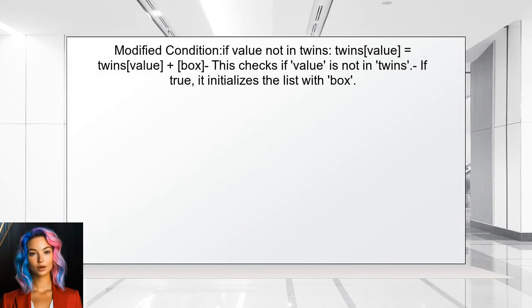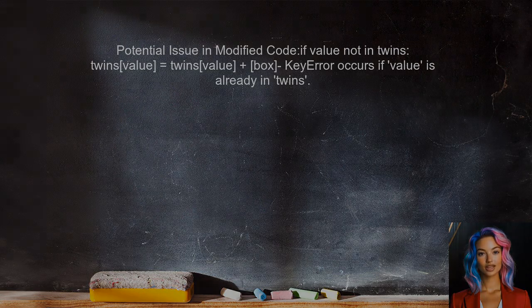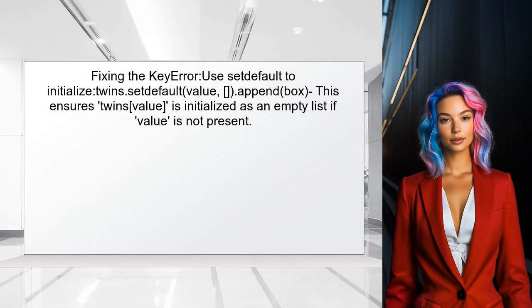Let's look at the modified condition. The user changed the inline if statement to a standard if statement, which makes it clearer and avoids the key error. However, the modified code still has a potential issue. If the value is already in twins, the code will raise a key error when trying to access twins' value. To fix this, the user should initialize the list for the value if it doesn't exist before trying to append to it. This can be done using the setdefault method.